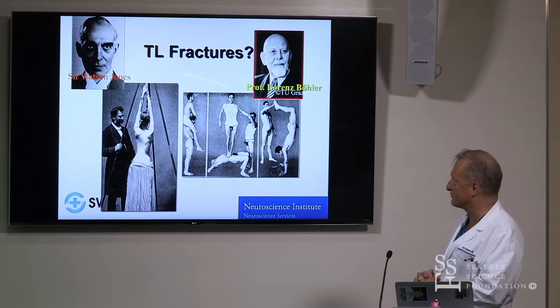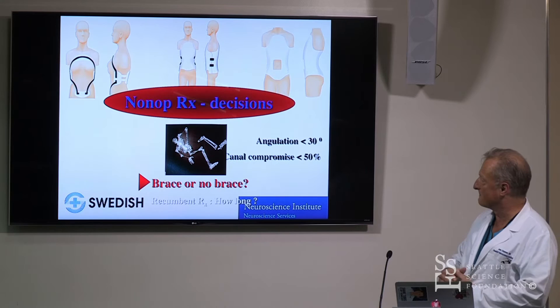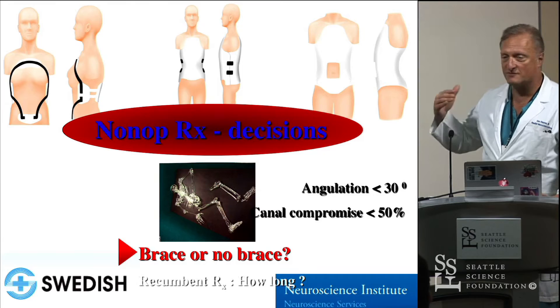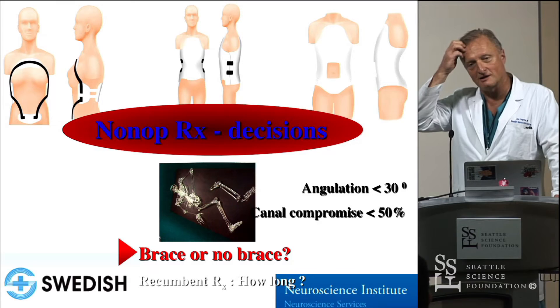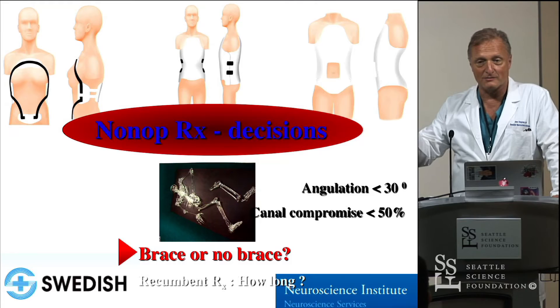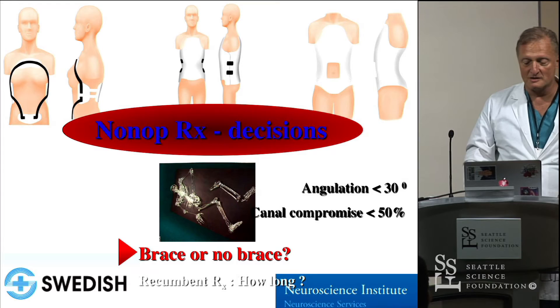Treatment principles for thoracolumbar fractures: our European colleagues from Germany and England set the stage. We can probably use braces far more. Recent data on neurologically intact patients with intact PLC and no dislocation really supports non-operative care. Secondary neurologic decline is very rare. If you have doubts, use the upright test — put them in a brace and see how the patient does. If they can tolerate upright over a day or two, great. If not, rethink your approach. Secondary neurologic deterioration is actually very rare.